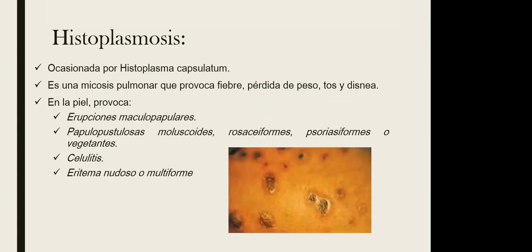La histoplasmosis es ocasionada por Histoplasma capsulatum, una micosis pulmonar que provoca fiebre, pérdida de peso, tos y disnea. Las manifestaciones cutáneas incluyen erupciones maculopapulares, papulopustulosas con pus, rosaformes que indican presencia de vasos, psoriasiformes con manchas secas y escamosas, o vegetantes con necrosis avanzada. También puede presentar celulitis, eritema nudoso y eritema multiforme. El histoplasma capsulatum puede causar distintas lesiones en la piel sin caracterizarse por una específica.